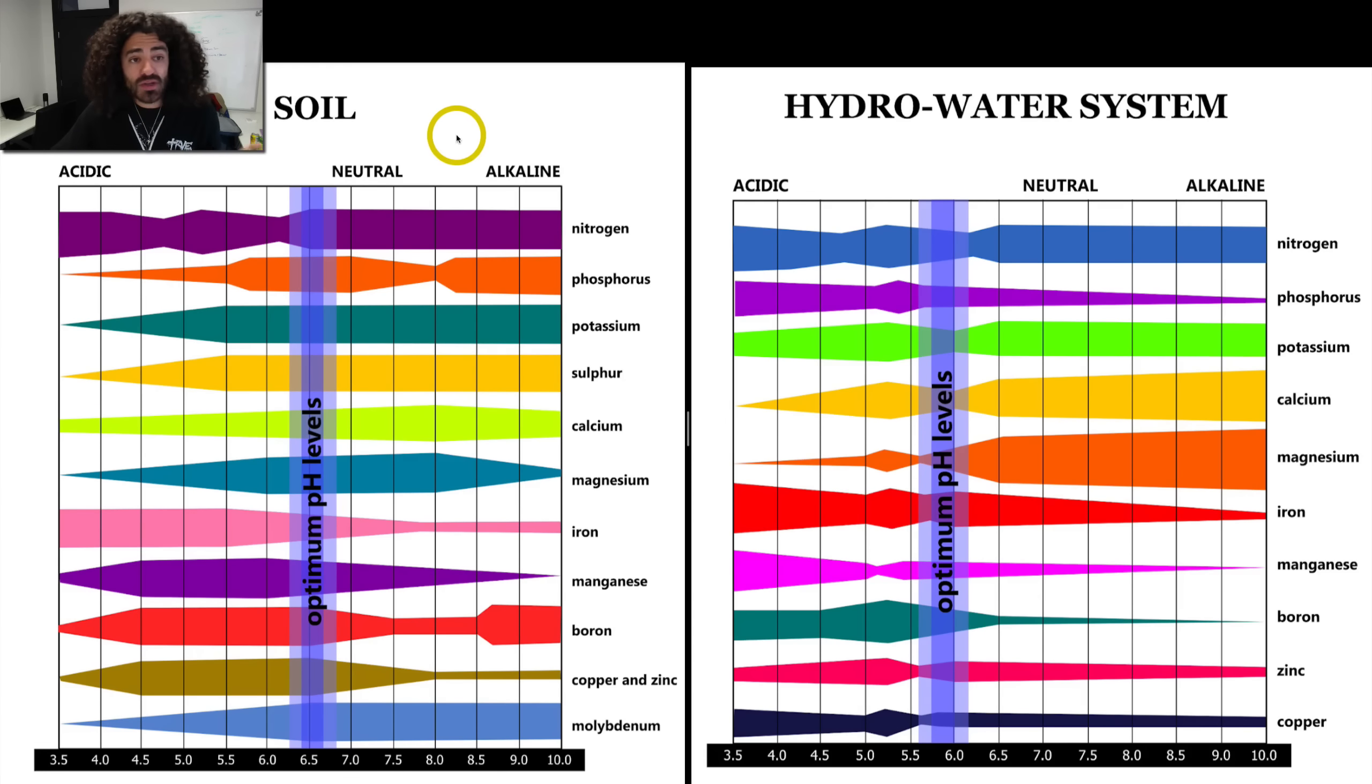So as you can see on my screen, I've got two different charts here - one's for soil and one's for hydro. And essentially what we're looking at is, first let's talk about what pH is. pH stands for potential hydrogen, and it's measuring the alkalinity or acidity of a nutrient solution. And as you can see on these charts, it goes from one to 14, and seven is neutral.